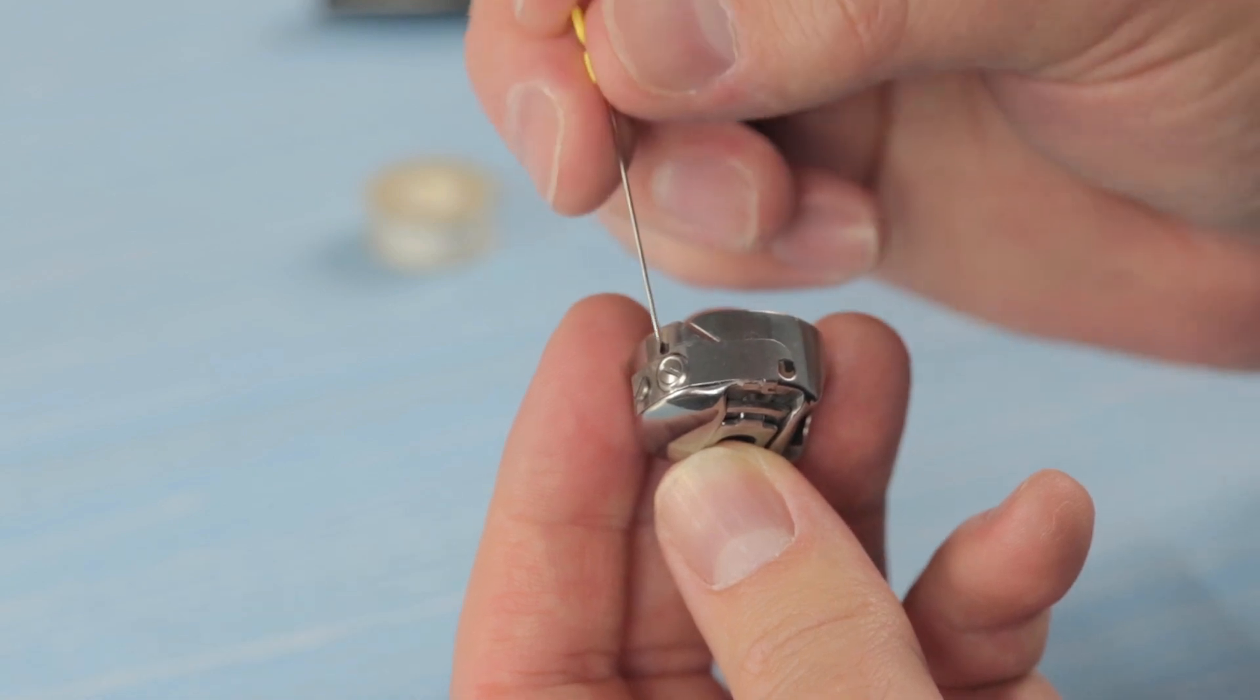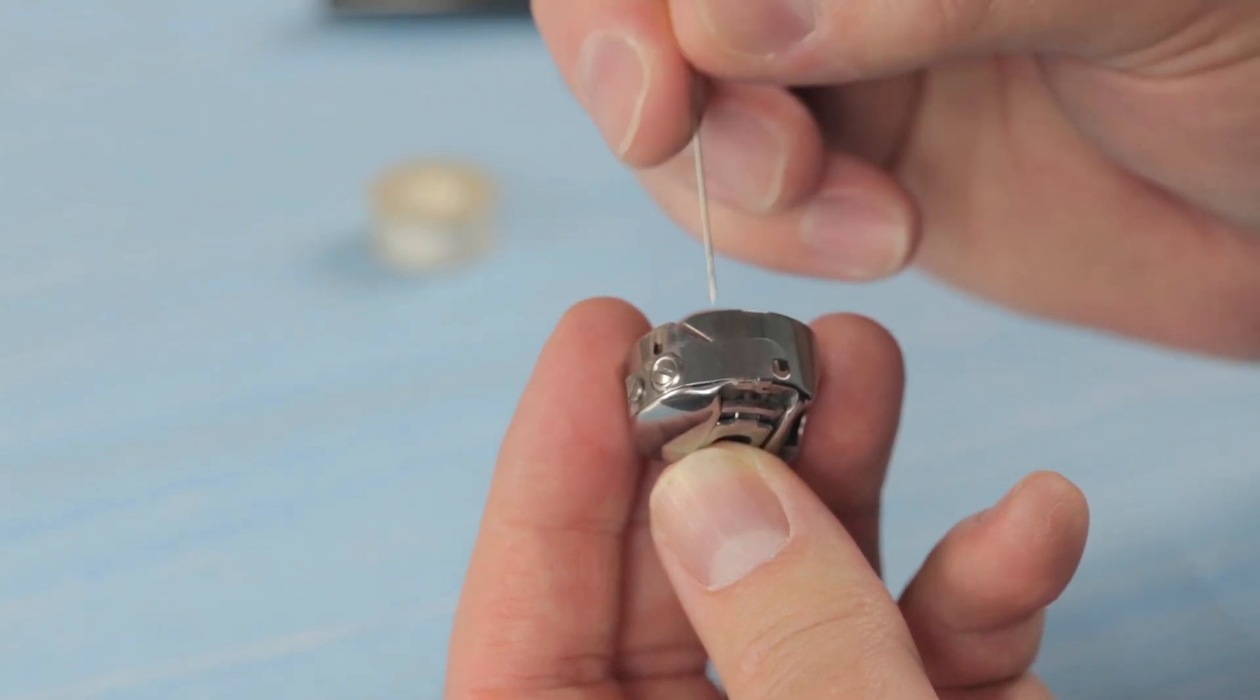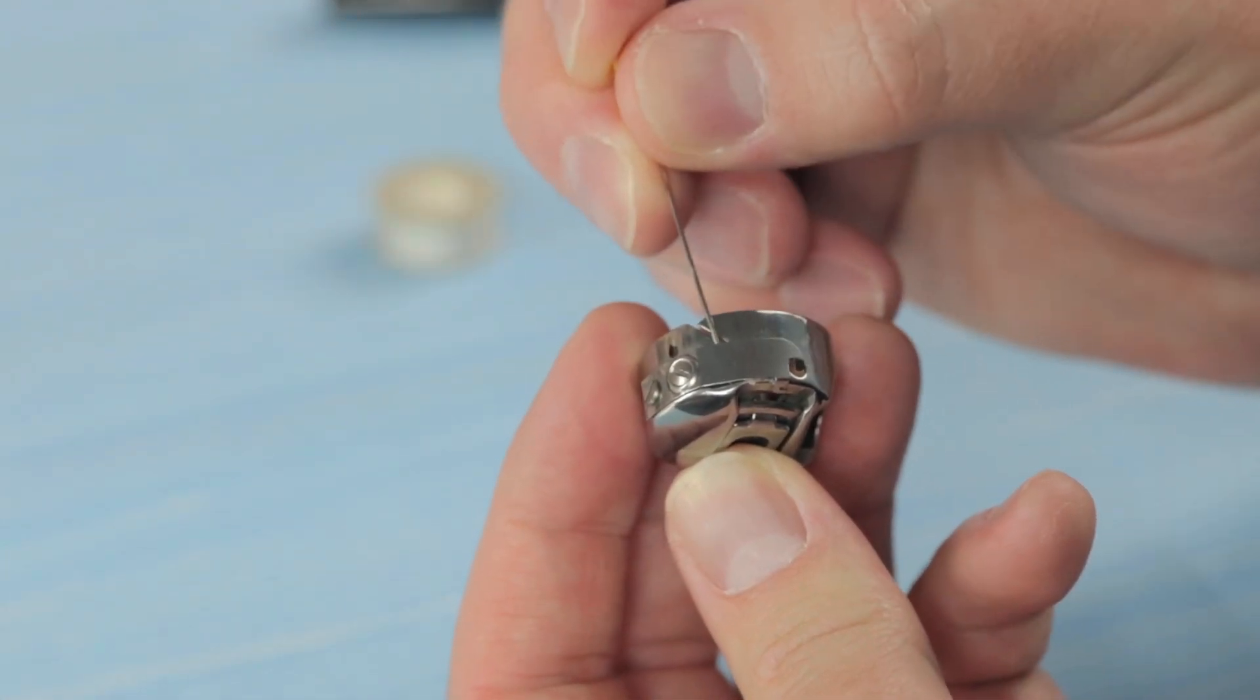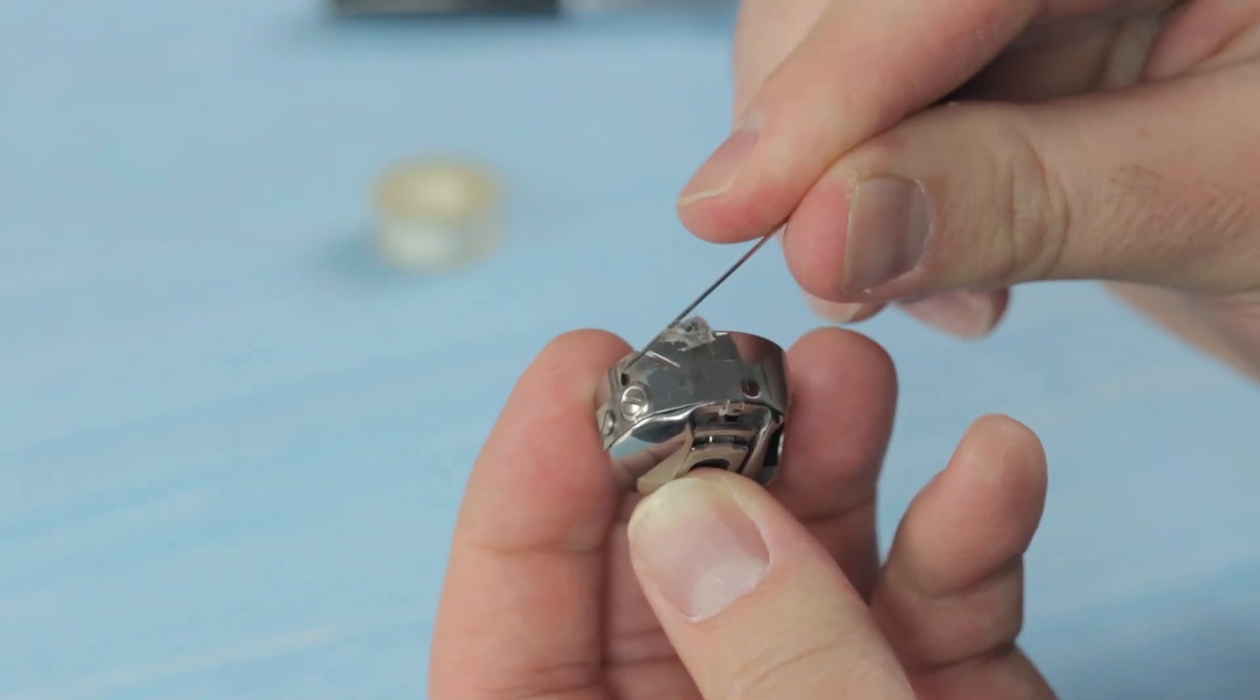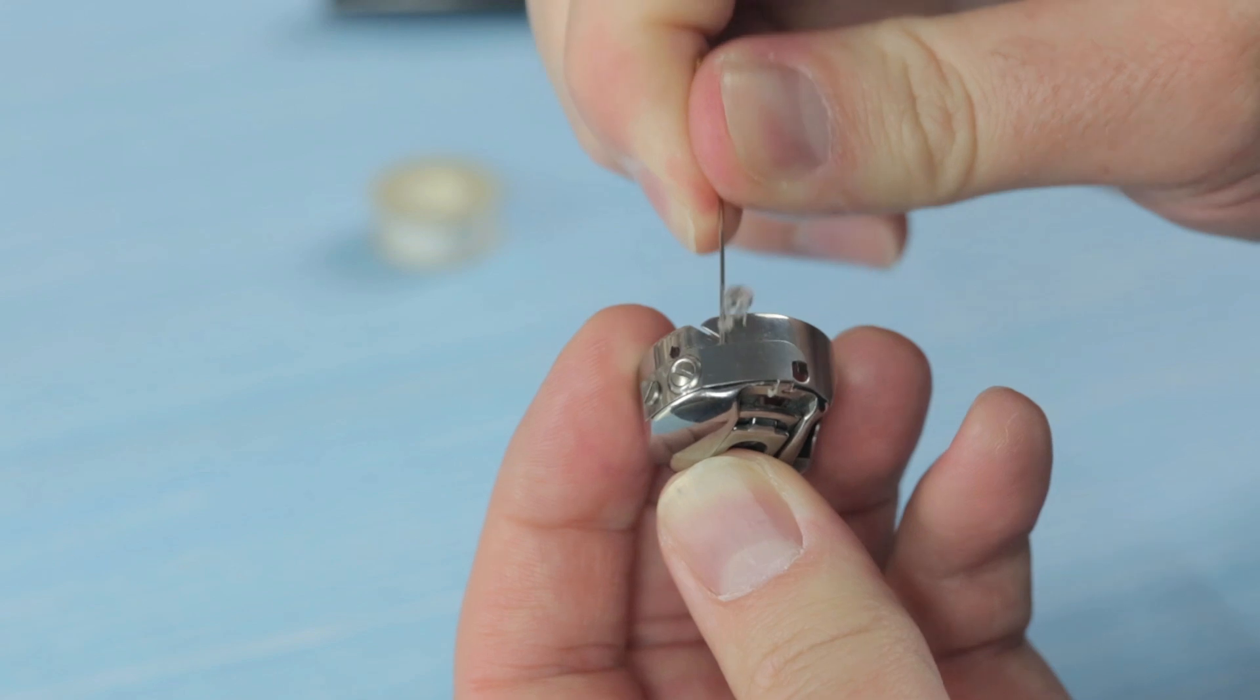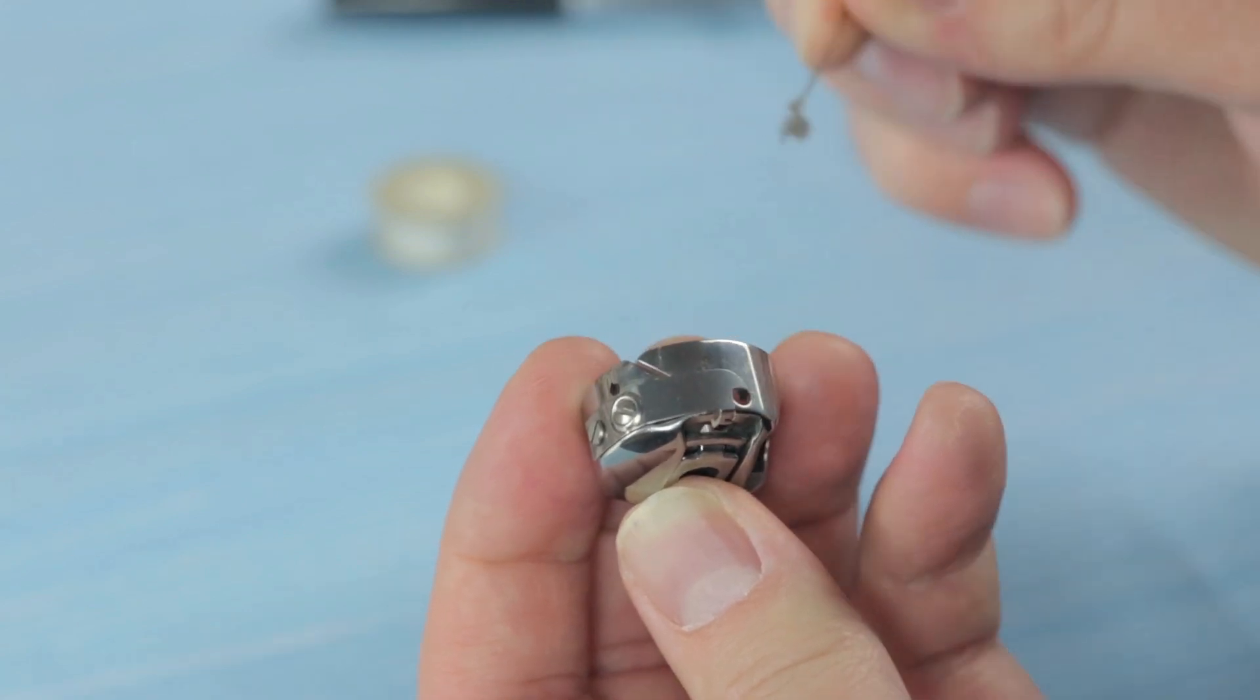A linty bobbin case may also affect your tension. To clean the case, we take a pin, slide it in between the spring and the wall of the bobbin case and slide it out. If there's any lint, your pin will pick it up and take it right out.